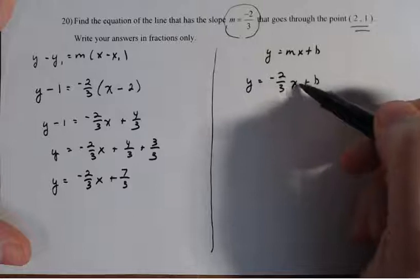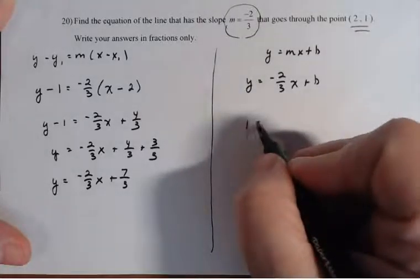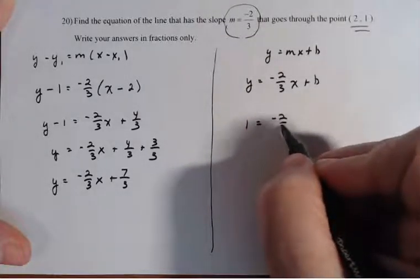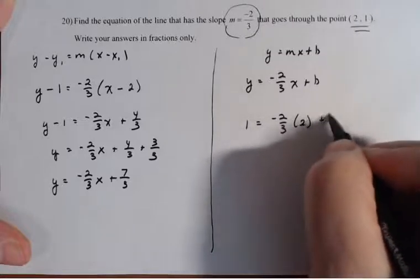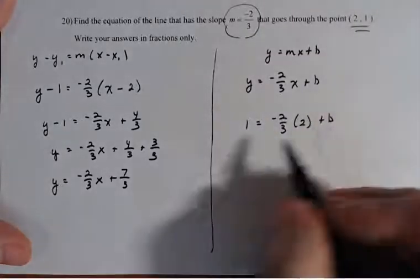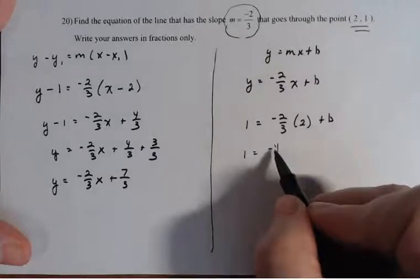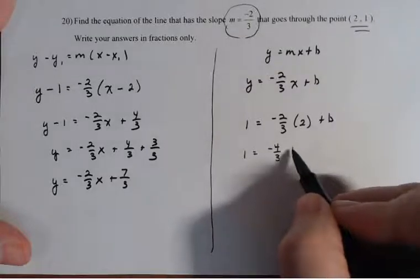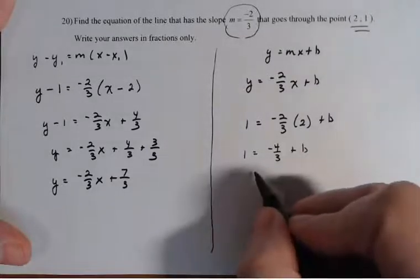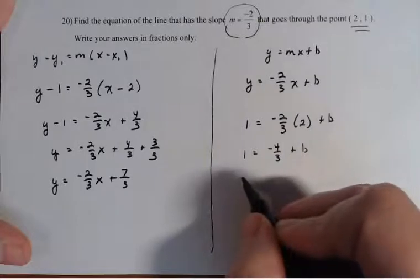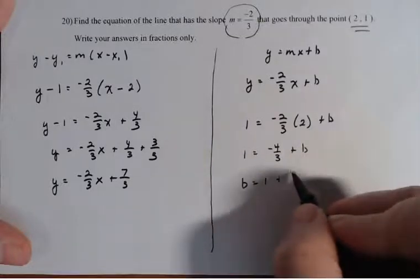So X is going to be two and Y is going to be one. So one equals minus two thirds times two plus B. And I'm going to solve for B. One equals minus four thirds plus B. B is equal to one plus four thirds.